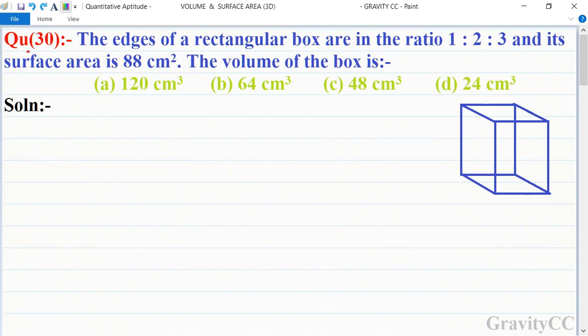Chapter volume and surface area, question number 30. The edges of a rectangular box are in the ratio 1:2:3 and its surface area is 88 centimeter square. So the volume of the box is what? In this question, given that the ratio of their edges is 1:2:3.